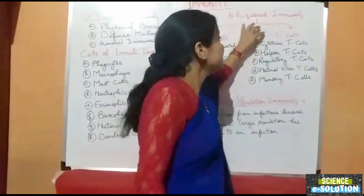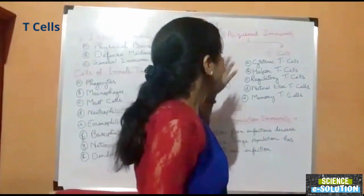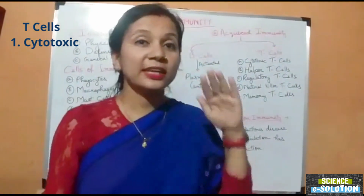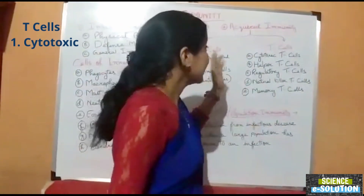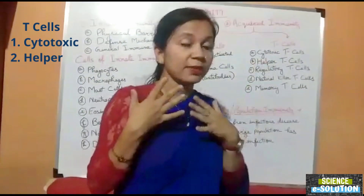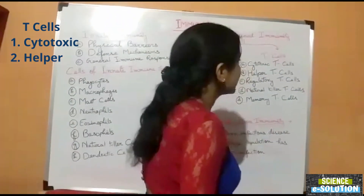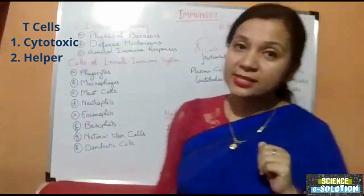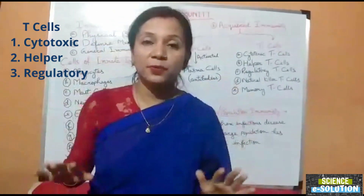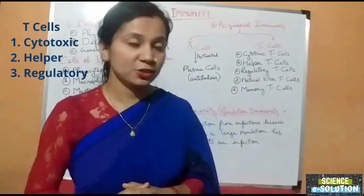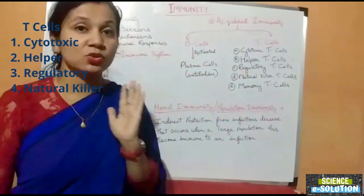The second component of acquired immunity is T cells, which are of different types and help combat the antigen-antibody reaction. Cytotoxic T cells kill cells infected by outside antigens to stop the spread of disease. Helper T cells do not secrete anything themselves, but they stimulate B cells to secrete antibodies and also stimulate cytotoxic T cells for their work. Regulatory T cells, after the antigen-antibody reaction is over, help suppress the immune response to return the body to normal. Natural killer T cells also destroy infected cells to stop the spread of disease.